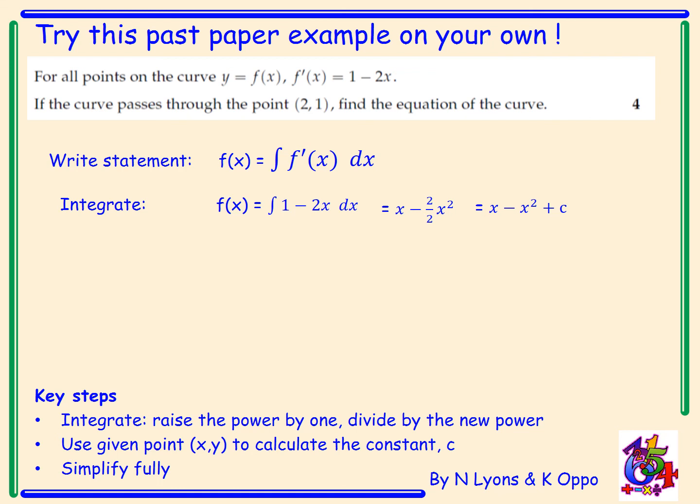Now you have to find what c actually is. Go back and look at the information you've been given. We're given the point (2, 1), so what we've really been told is when x equals 2, y equals f(x) equals 1. Using that information, sub it in.